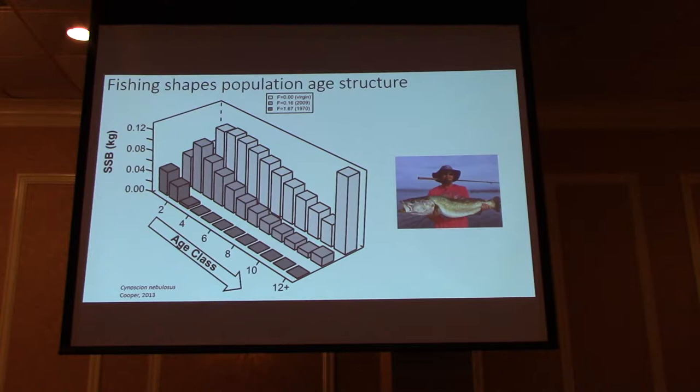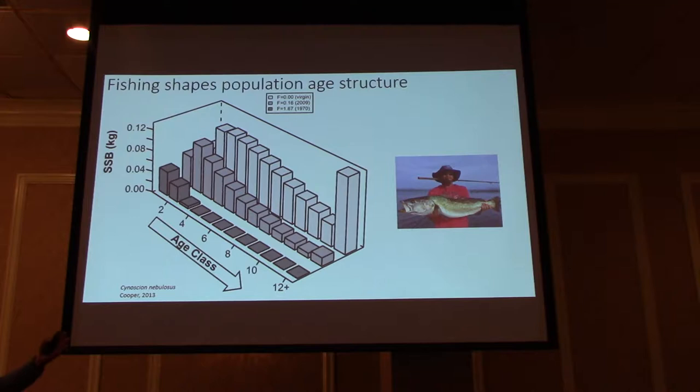We know that fishing shapes population age structures. Here's an example of Cynosis nebulosis, where at different fishing mortality rates we see very different age structures — this is age structure and spawning stock biomass. You can see in the lightest gray, when there's no fishing mortality, you have quite a relative proportion of fish of all different ages. As that fishing mortality rate increases from medium gray to darkest gray, we see not only an overall reduction of age classes, but a disproportionate reduction in the oldest age classes.